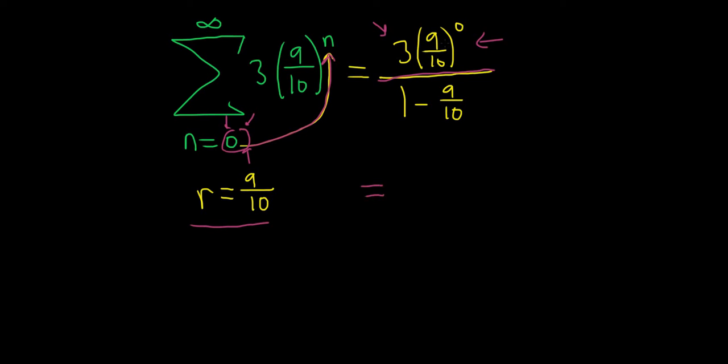This is equal to 9 tenths to the 0 is 1. So it's 3 times 1. On the bottom, we have 1 minus 9 tenths. We can think of that as 10 tenths minus 9 tenths. This will be 3. And then 10 tenths minus 9 tenths is 1 tenth. So this is 3 times 10 over 1. So this is equal to 30. And that would be the final answer to the question. That's it.